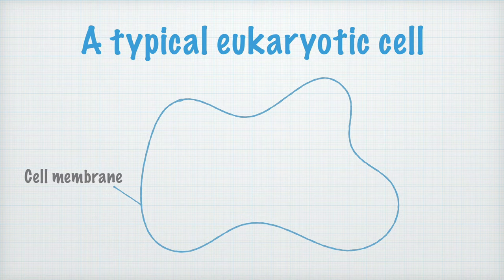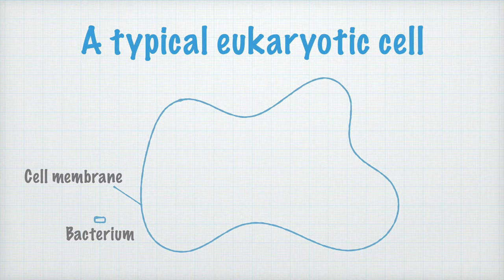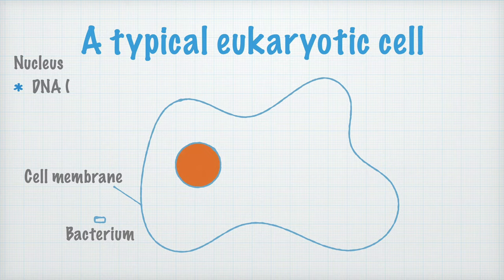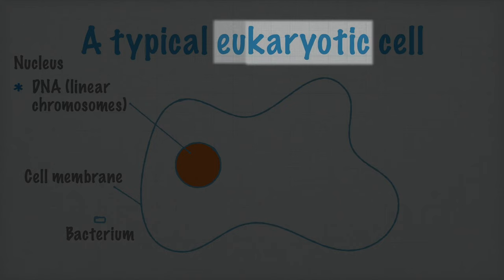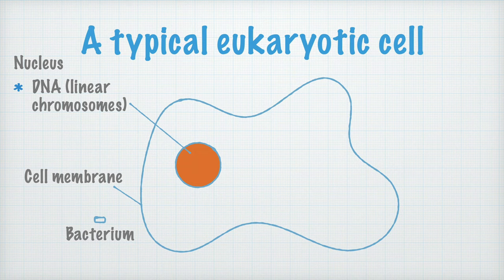Speaking of bacteria, let's draw a bacterium here for reference. Both bacteria and eukaryotic cells may vary quite a lot in size, but a eukaryotic cell is roughly 10 to 100 times larger than a bacterial cell. What's particular about eukaryotic cells is that they contain a nucleus — that's actually what the word eukaryote means. 'Eu' is Greek for 'true,' and 'karion' means 'nut' or 'kernel.' The nucleus contains the cell's DNA. Contrary to bacteria, eukaryotic cells have more than one chromosome — in humans, for example, there are 46 — and they are linear. The nucleus is enclosed by a nuclear envelope, which is also a kind of phospholipid membrane. Inside the cell is cytoplasm, a kind of intracellular fluid.